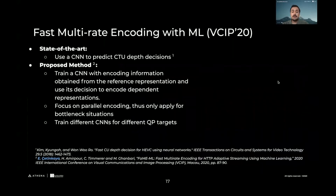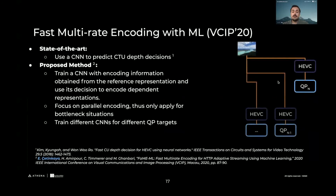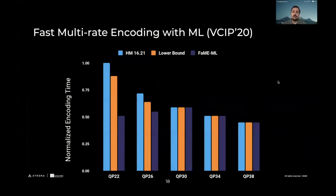After that, we saw there was still room for improvement and we could use machine learning — that was our third paper for the DCC 2020 conference. Here, we extracted information from the lowest-coded representation and used that information to train neural networks to help speed up the encoding of the higher-complexity representations. This was the time graph we got from that work.